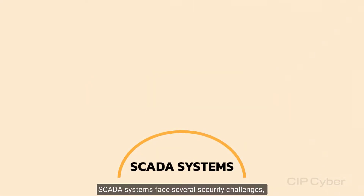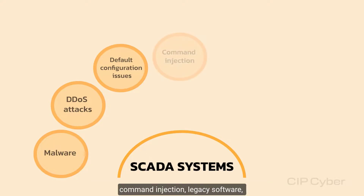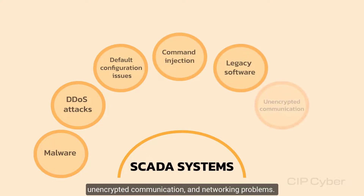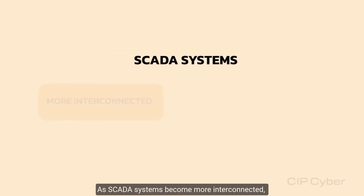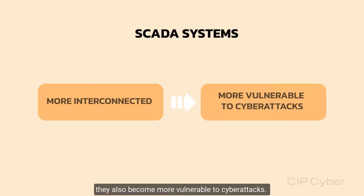SCADA systems face several security challenges including malware, DDoS attacks, default configuration issues, command injection, legacy software, unencrypted communication, and networking problems. As SCADA systems become more interconnected, they also become more vulnerable to several attacks.